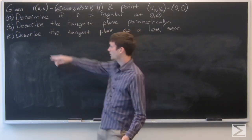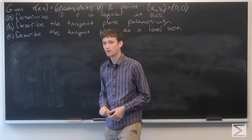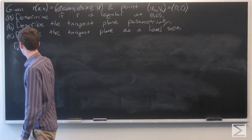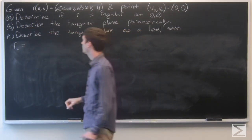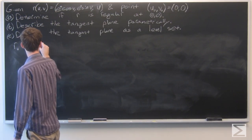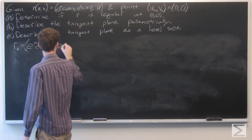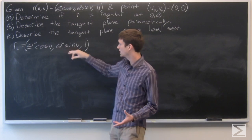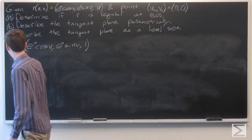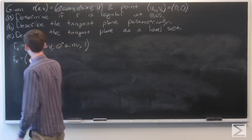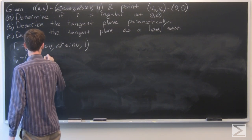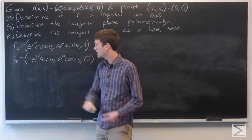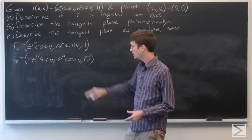First — and we can only do parts b and c if r is regular, but we'll see that r is regular. For part a, we'll determine if it's regular. To do so, we'll take the partial derivative of r with respect to u, and we get (e^u cos v, e^u sin v, 1). And the partial derivative of r with respect to v is (−e^u sin v, e^u cos v, 0).